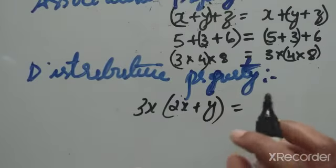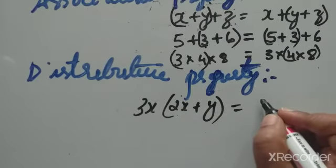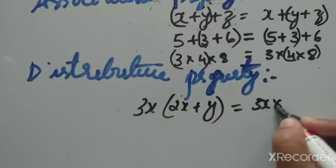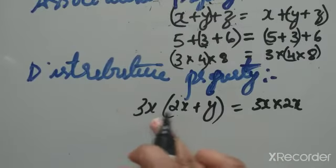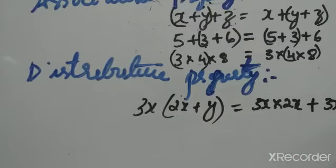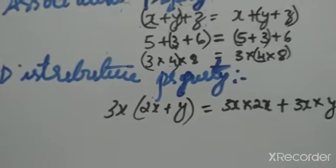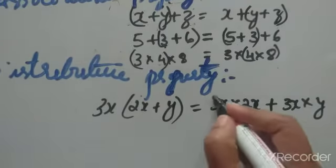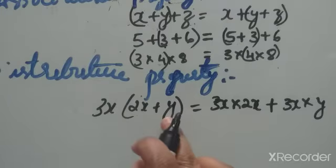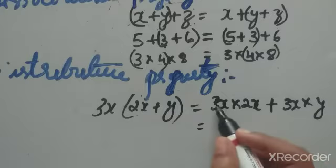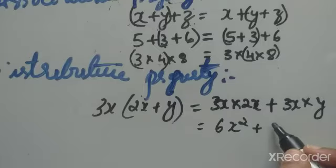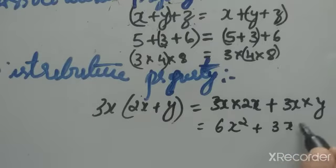The left-hand side is given as 3x into 2x plus y. To simplify, we distribute: 3x into 2x plus 3x into y. So 3x into 2x plus 3x into y — monomial into each term. And 3x into y equals 3xy. This is our distributive property.